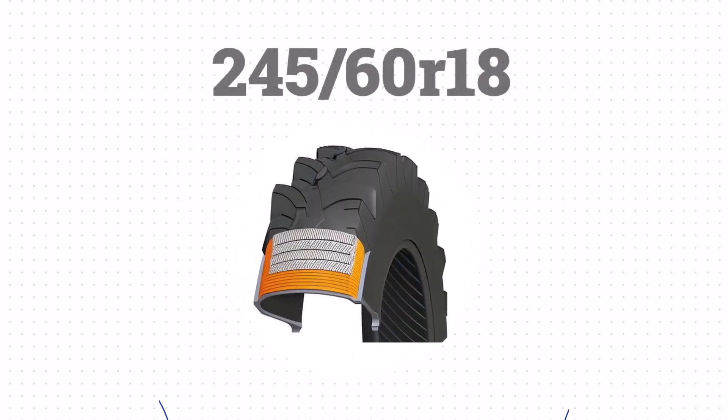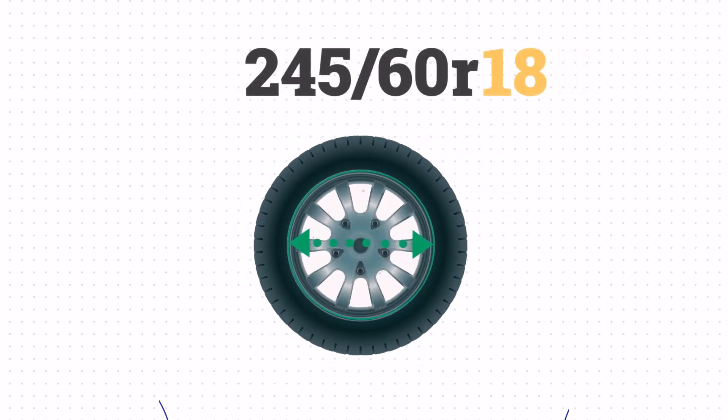The R just means radial construction, as opposed to bias ply. And the final number, 18, that's the wheel size.